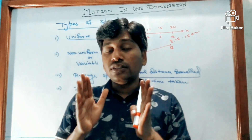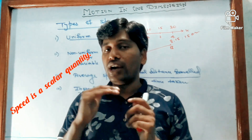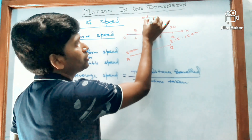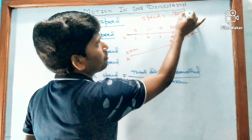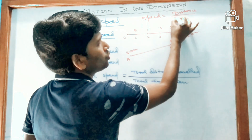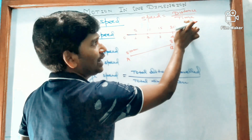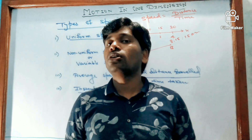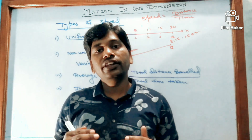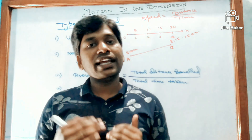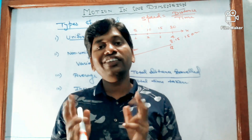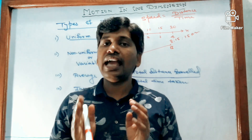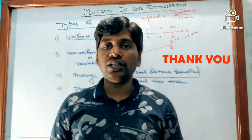Speed is a scalar quantity. Why? Because speed equals distance divided by time. Distance is a scalar quantity and time is also a scalar quantity, so speed is also a scalar quantity. In the next video, I will explain velocity, the difference between speed and velocity, and acceleration. Thank you, students.